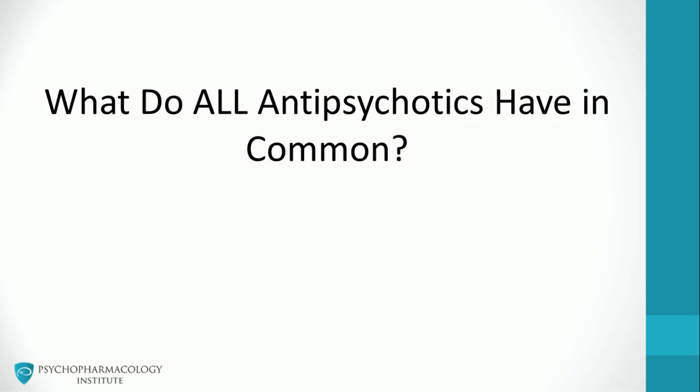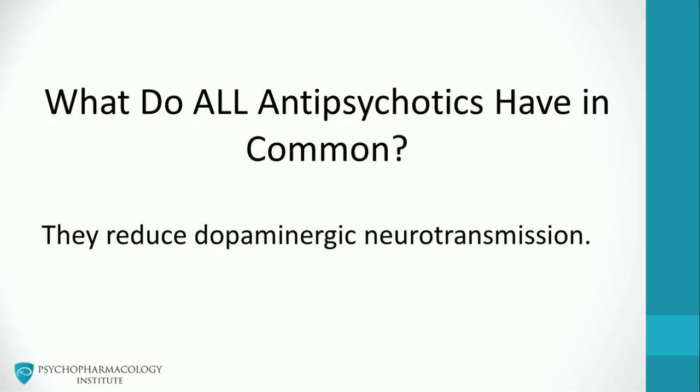Let's start by answering this very important question: what do all antipsychotics have in common? The answer is relatively simple — they all reduce dopaminergic neurotransmission. In the upcoming slides, we'll see how and where this takes place, and why dopaminergic blockade is important in psychosis pathophysiology.